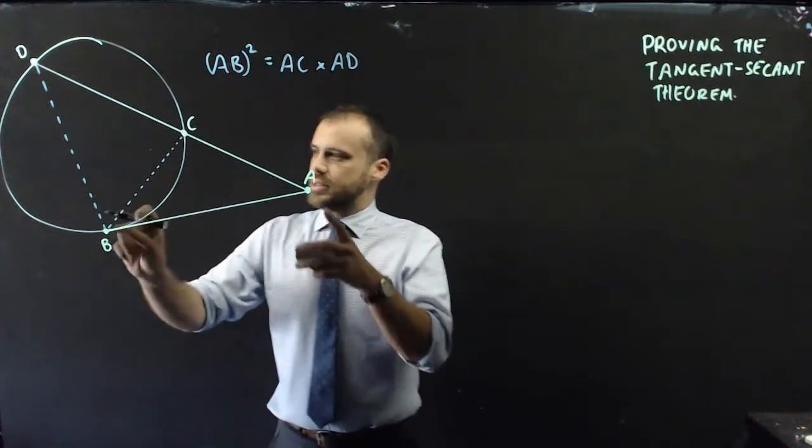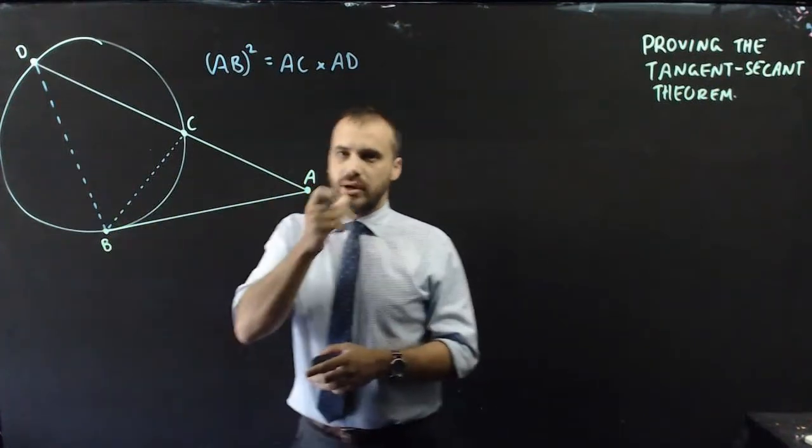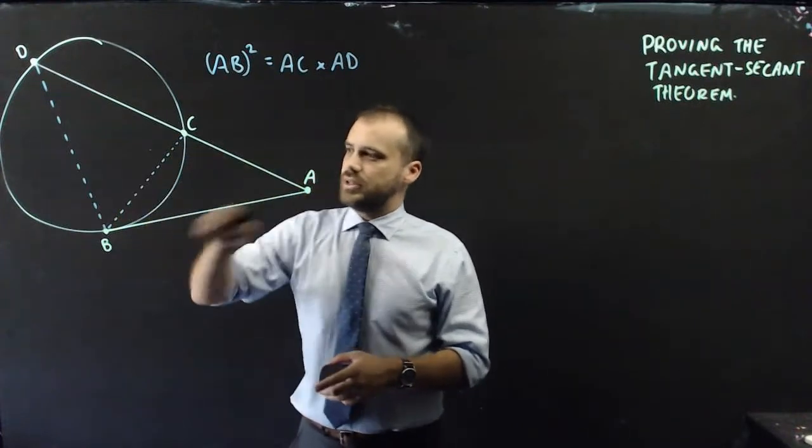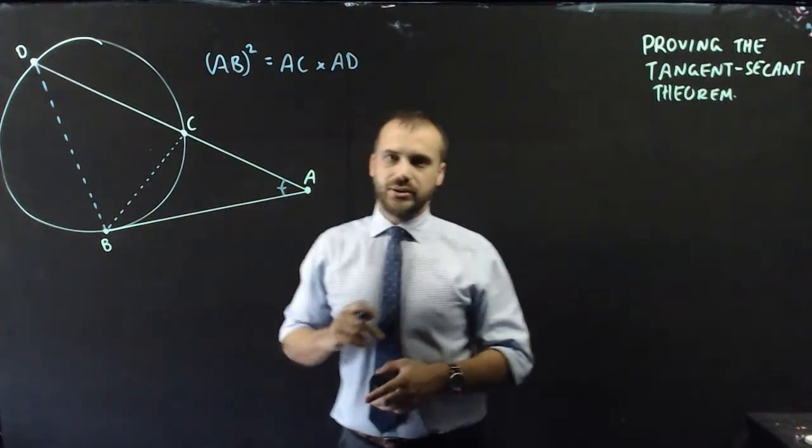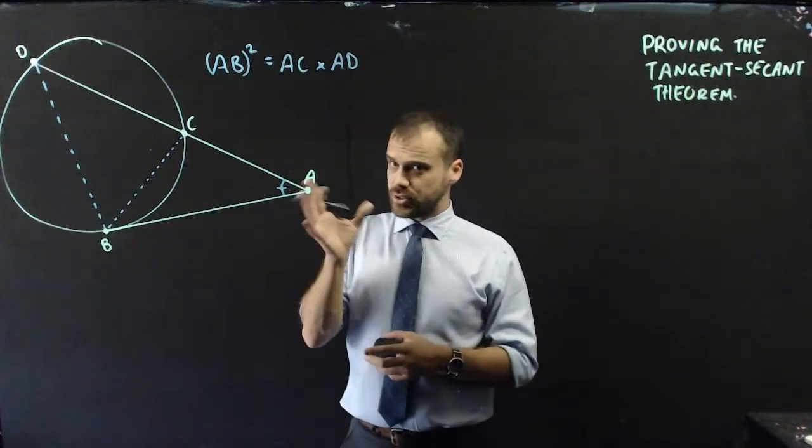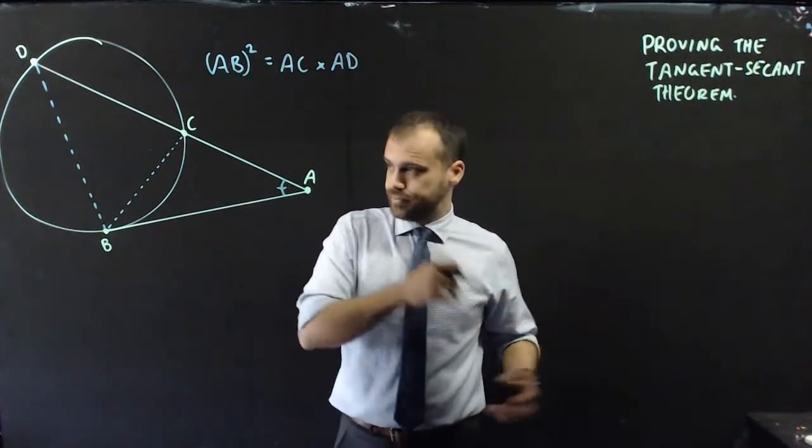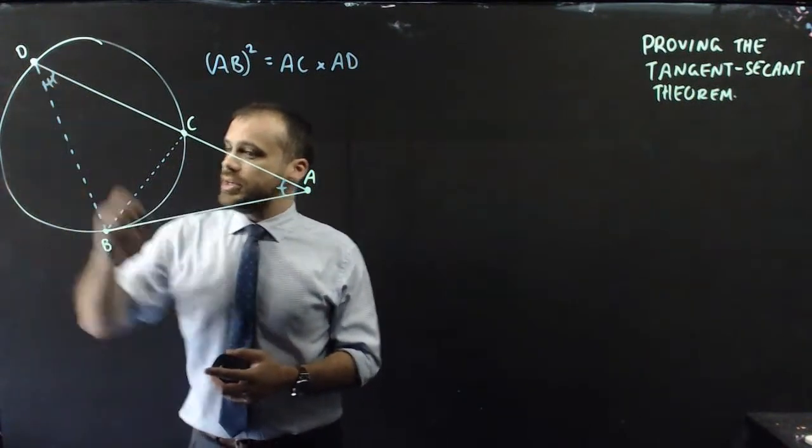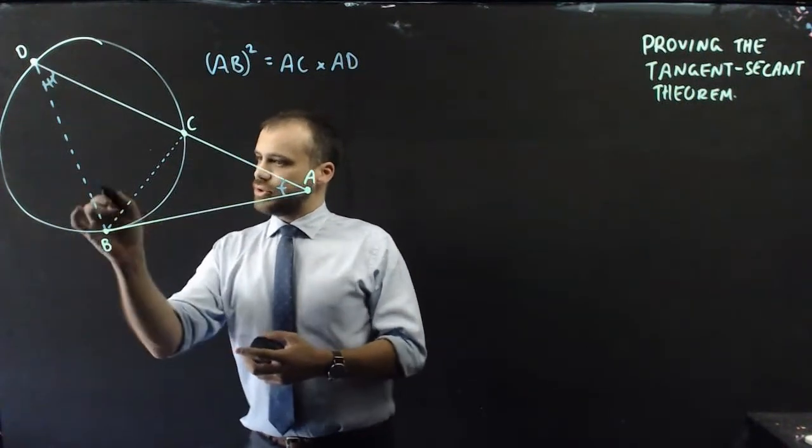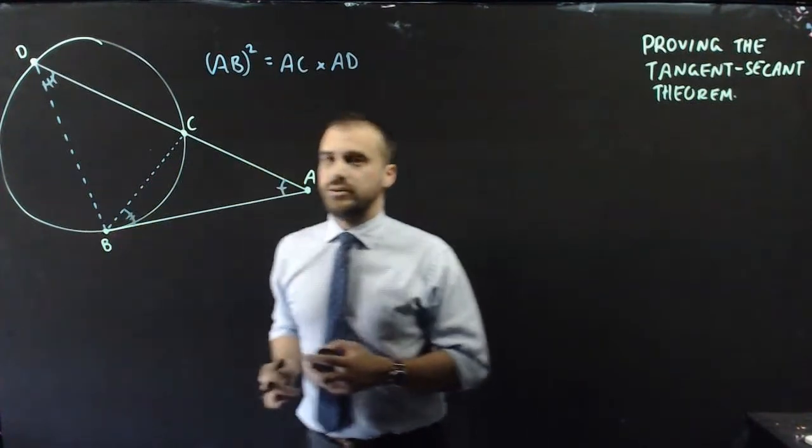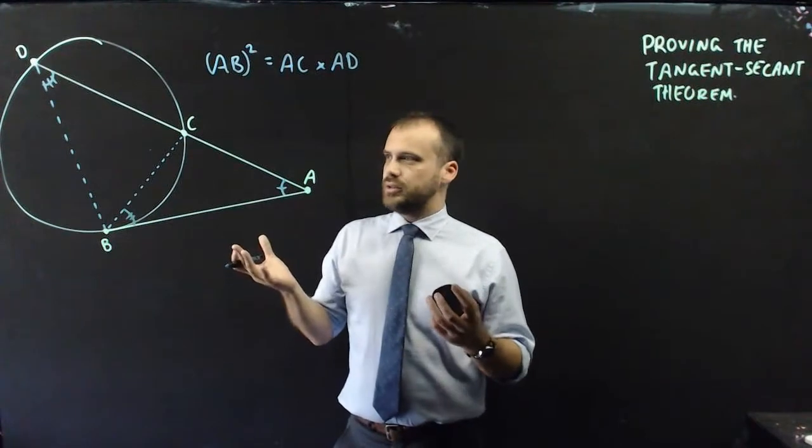We're going to prove that this is similar to that. Well, how can we do it? This triangle here and this triangle in here have this angle in common—that's a good start. Now you should remember your alternate segment theorem, which will tell us that this angle here is equal to—and I need to be really careful here—this angle here.